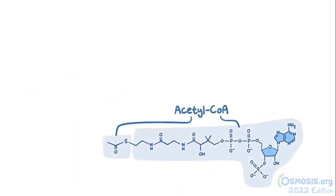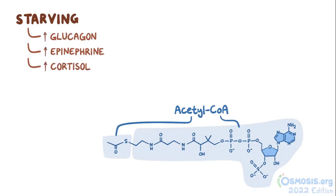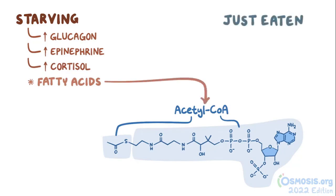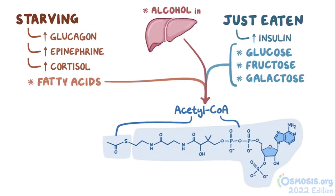Acetyl-CoA comes from various sources depending on whether you've just eaten or are starving. If you're hungry and a bit angry — feeling hangry — stress hormones like glucagon, epinephrine, and cortisol start to rise, and fatty acids from triglycerides become the primary source of acetyl-CoA. After a meal, insulin is plentiful, and acetyl-CoA comes from breaking down glucose, fructose, and galactose, with glucose playing the biggest role. Alcohol is also a source of acetyl-CoA in the liver, and proteins can also contribute.